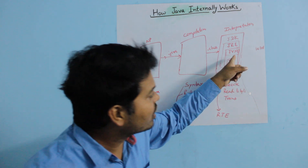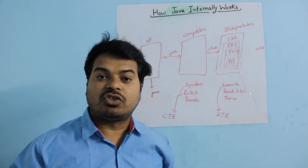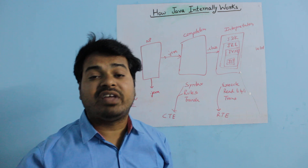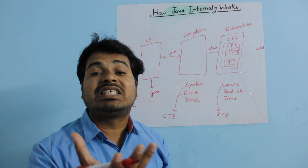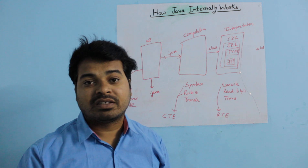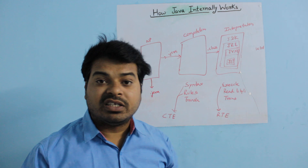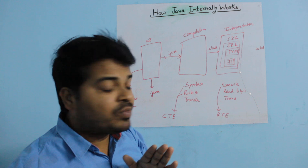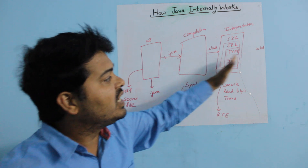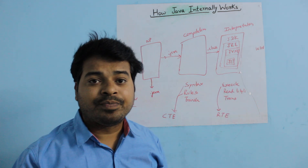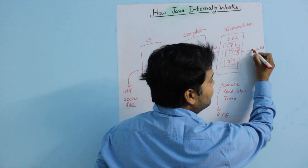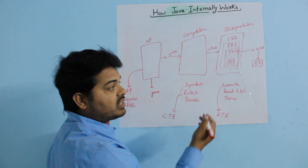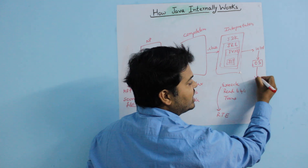JVM, or Java Virtual Machine, does not exist physically, but because of JVM your program execution takes place. JIT, or Just-In-Time compiler, is responsible for converting your .class file into binary numbers. Finally, those binary numbers are given to the operating system, which runs the program and gives you the output.